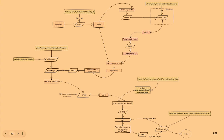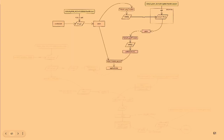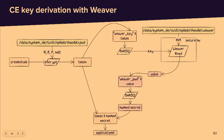Looking at the CE key derivation schema modified for Weaver: credentials are turned into a token via scrypt. The token is hashed to produce a key that is sent to the security chip along with a slot number from a device-encrypted file. If the key matches, the chip returns the value, which is hashed to produce the hashed secret. Token and hashed secret are concatenated to produce the application ID, and from there the derivation is identical to the previous case.